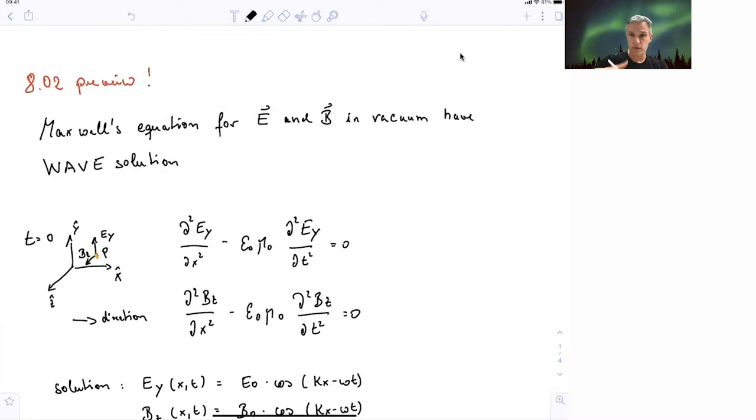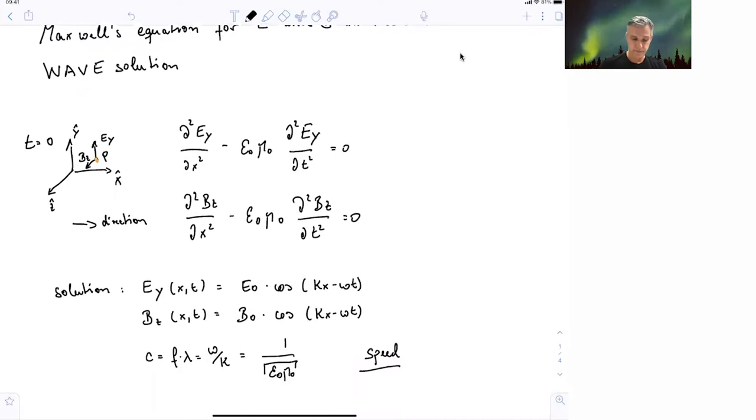And you can already tell from the name wave equation, solutions of this equation, these differential equations are sines and cosines. So one solution here is E_y equal to E_0 times cosine kx minus omega t.